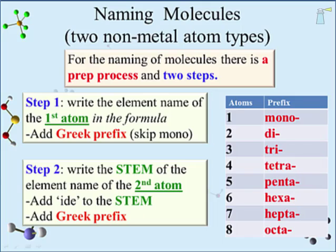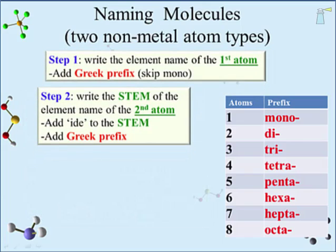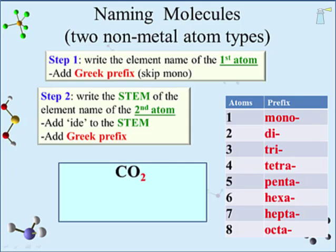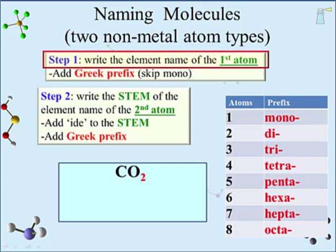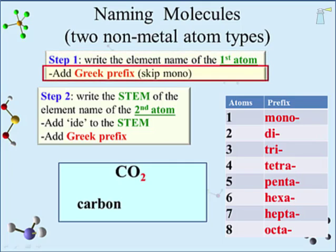A few examples are in order. We will use the molecule CO₂. Step 1 has us writing out the element name of the first atom: carbon. Part of step 1 is to add the Greek prefix from the subscript on carbon. Since there is no number, we imply it is 1, which corresponds to 'mono.' Step 1 also says that if the prefix for the first element is mono, we do not need to include it — we get to skip it. The first element is done.